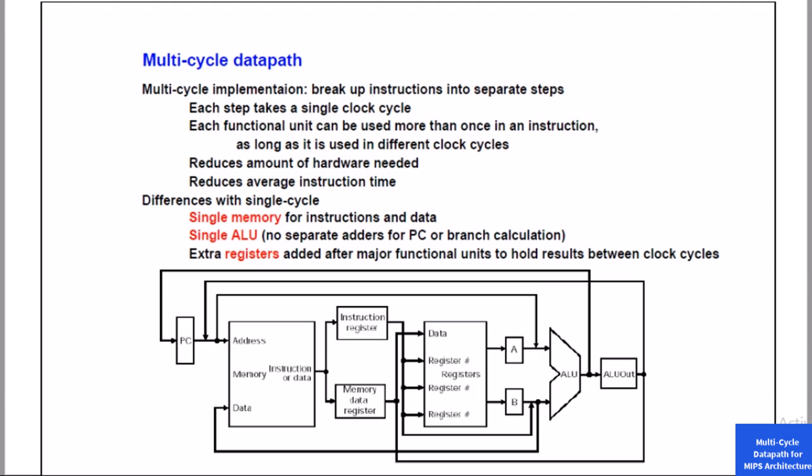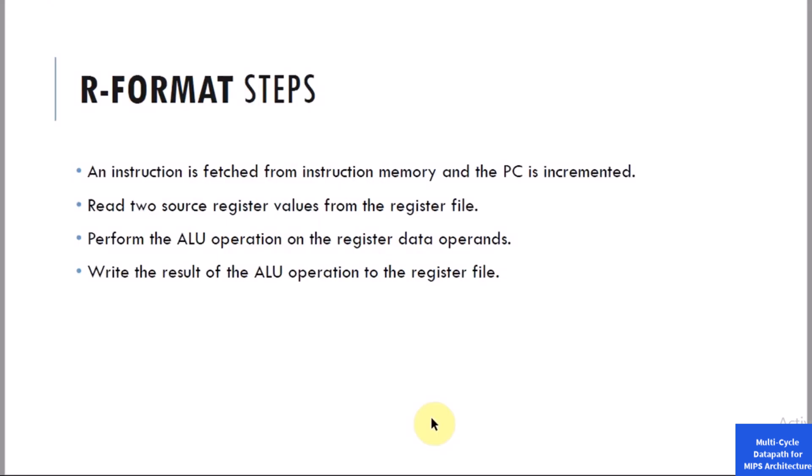We can resolve some of these disadvantages by introducing a little more complexity to our datapath. Instead of viewing the instruction as one big task in single-cycle, the instructions are broken up into smaller, fundamental steps. As a result, we can shorten the clock period and perform the instructions incrementally across multiple cycles.